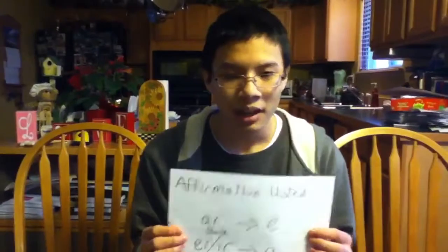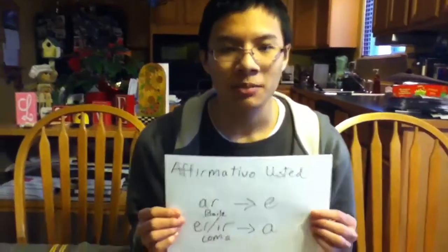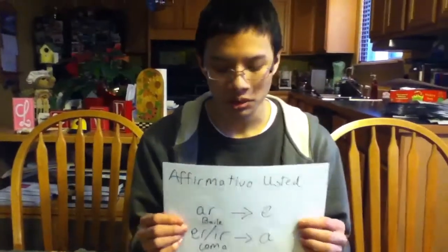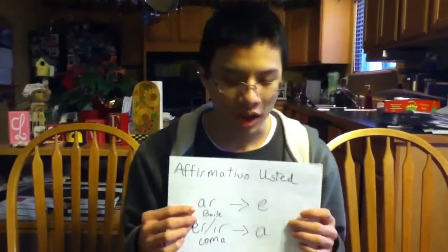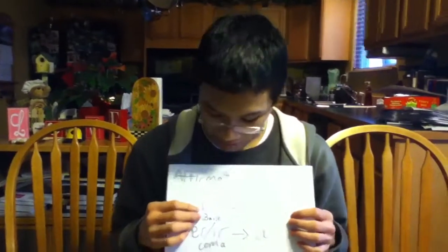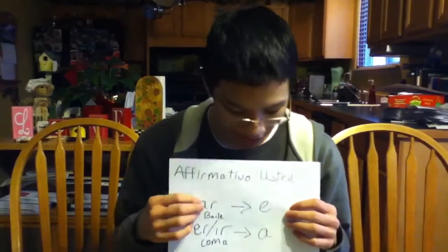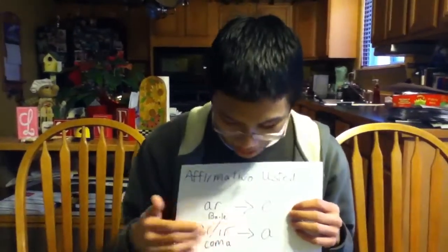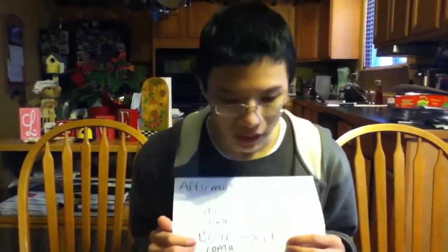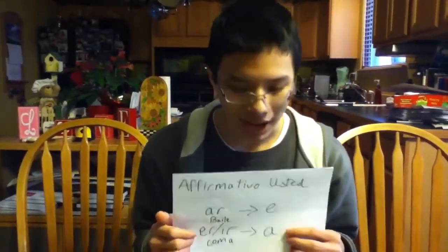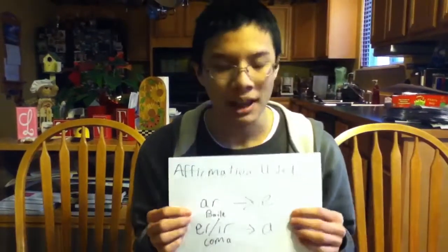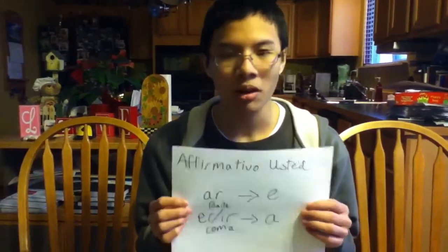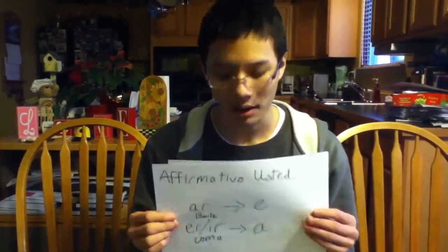To make an usted affirmative mandato, conjugate the verb in the yo form, drop the O, and if it's an AR verb add an E, and if it's an ER or IR verb add an A. For example, you say baila or coma.